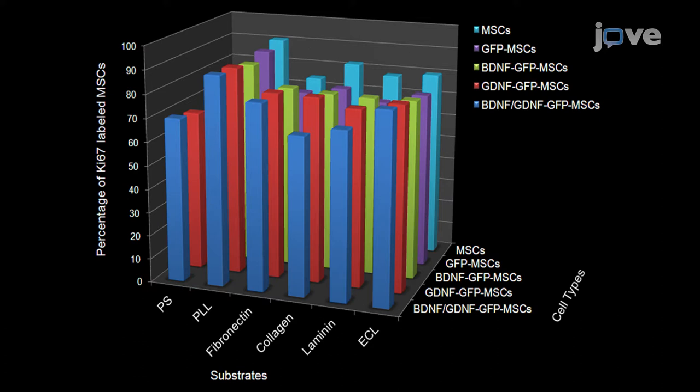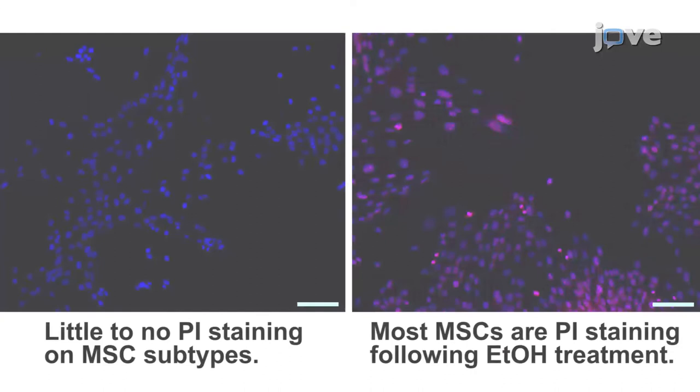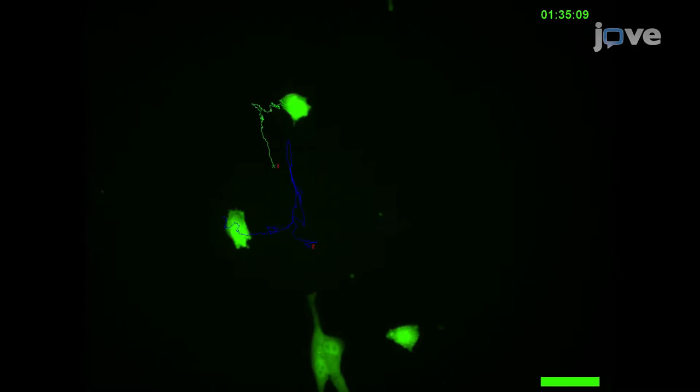This plot shows that the percentage of cells with propidium iodide, or PI staining, which identifies dead cells in a population, is low on all substrates examined. Cells treated with 70% ethanol, which kills most cells, exhibited a high rate of PI labeling and serves as a positive control.